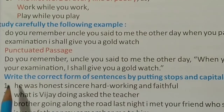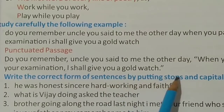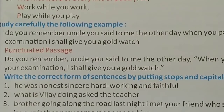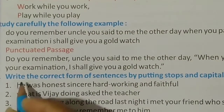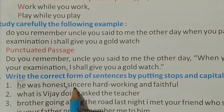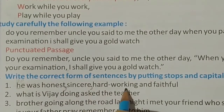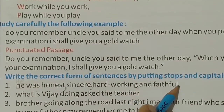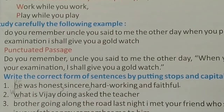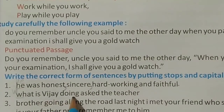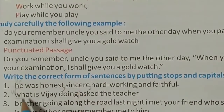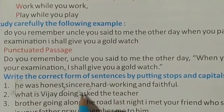Now write the correct form of sentences by putting stops and capitals. In the first sentence, the first word begins with a small letter, so we write: 'He was honest, sincere, hard-working, and faithful.' W is capital because it starts the sentence. The second sentence: 'What is Vijay doing?' asked the teacher — this sentence is in double inverted commas followed by a question mark.